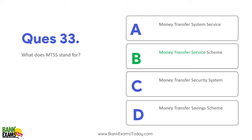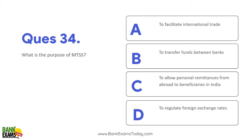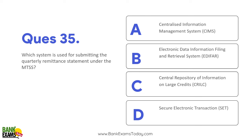What is MTSS - Money Transfer Service Scheme? Purpose kya hai? To allow personal remittances from abroad to beneficiaries in India - that is the purpose of MTSS. Which system is used for submitting the quarterly remittances under MTSS? CIMS - Centralized Information Management System - is used for submitting the quarterly remittance statements under MTSS.